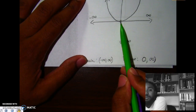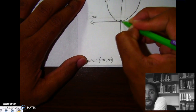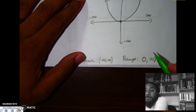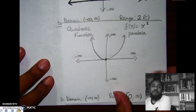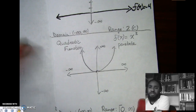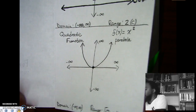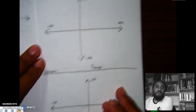The zero is a closed circle, so that gets a bracket rather than a parenthesis. So the range is bracket zero, positive infinity with a parenthesis. That's the second graph — the quadratic.